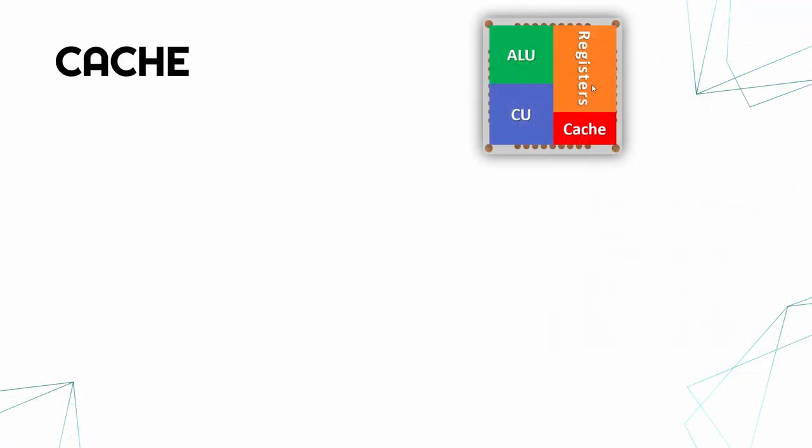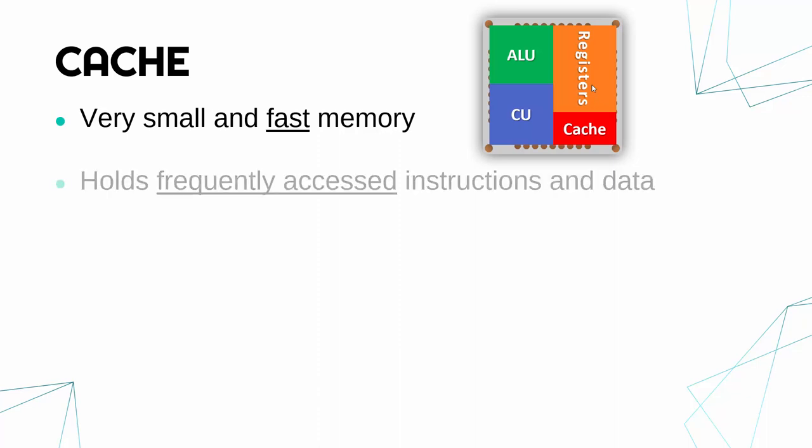The third type of memory is cache. Cache exists in a few places in the computer but mostly it's a small part of the CPU. It's very small but particularly very fast memory — much faster than ROM or RAM. Cache holds frequently accessed instructions and data. Because it is so quick and so small, the computer prioritises the most frequently used instructions and data to be held in cache. There's no point storing something that's rarely used in such precious fast memory.